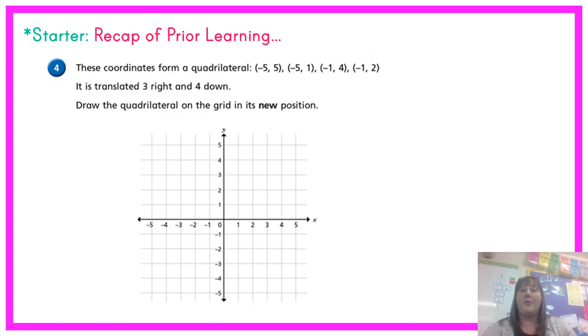Question number 3 says these coordinates form a quadrilateral and then we are given 4 sets of coordinates. It is translated 3 right and 4 down. The question is asking you to draw the quadrilateral on the grid in its new position. So first you need to plot the points on your grid. Take each point one at a time. If it helps you can cross off or tick the coordinates that you've plotted so you don't confuse yourself.